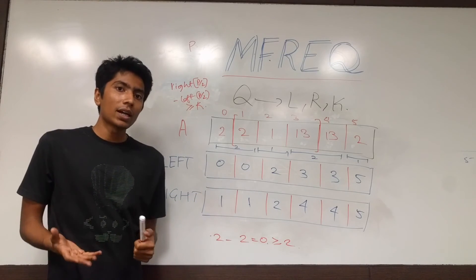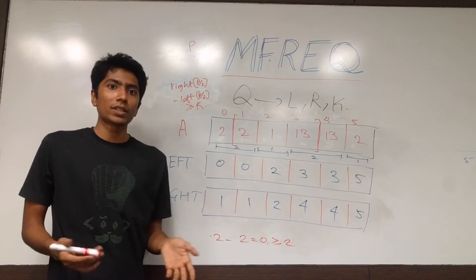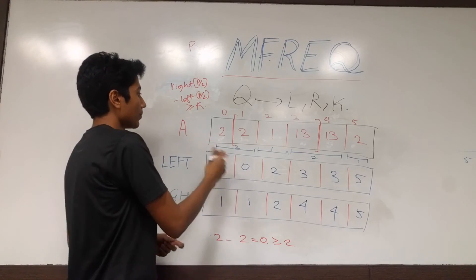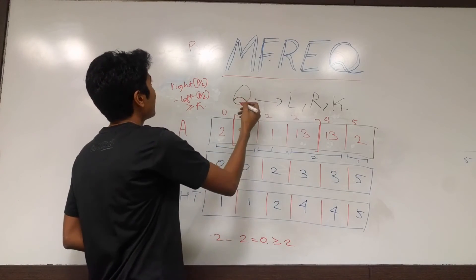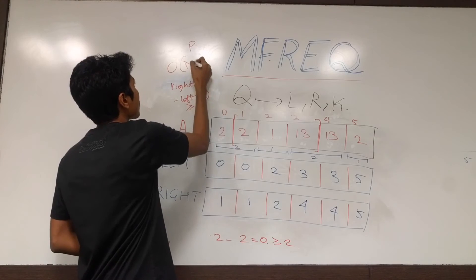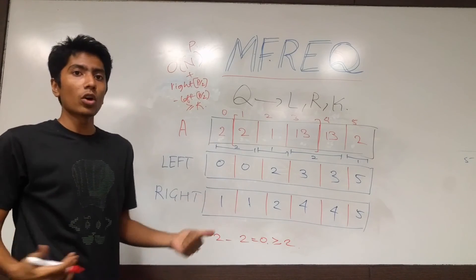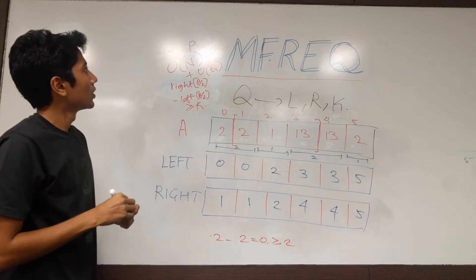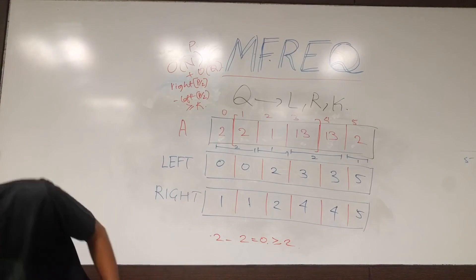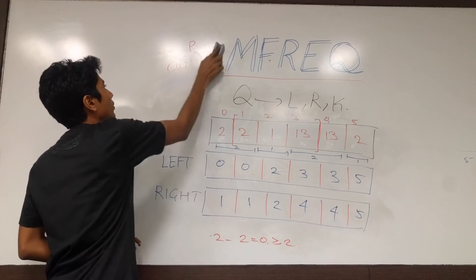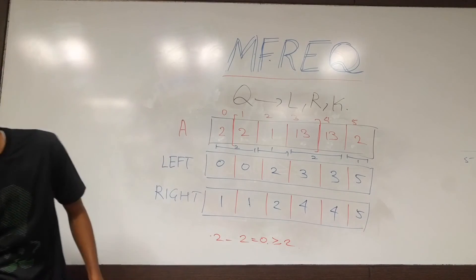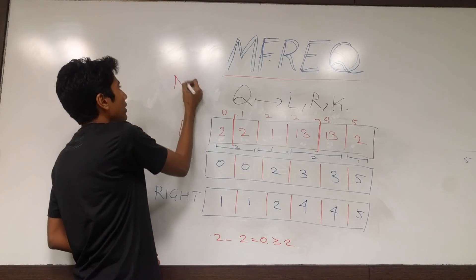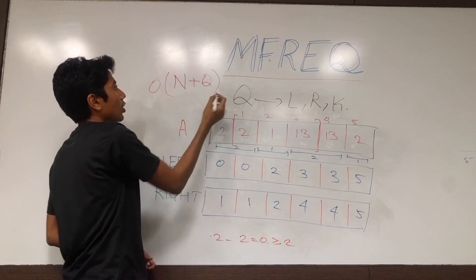So if the queries are being answered in order one time, what is the time complexity of this thing? Preprocessing takes you order n time, and all the queries take you order one time. So that is the number of queries. So final complexity is equal to n plus q order.